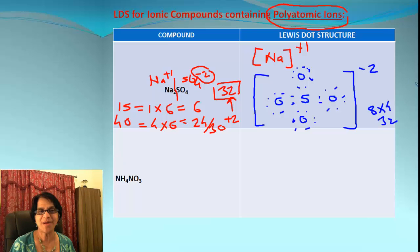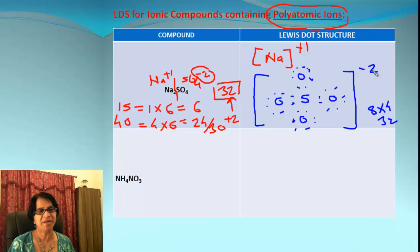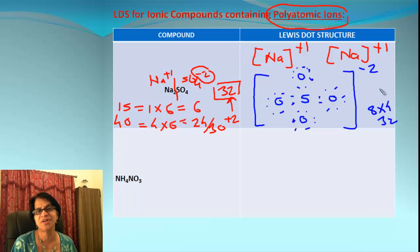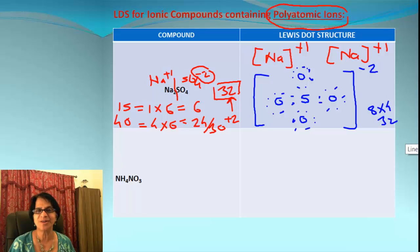One more thing to keep in mind: we have positive one for sodium and negative two for sulfate ion. The total net charge on both must equal zero, which means we should have two sodium ions. And that's what we have as the Lewis dot structure for sodium sulfate.